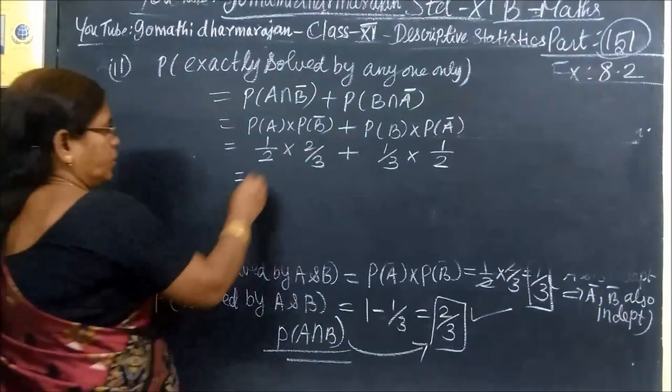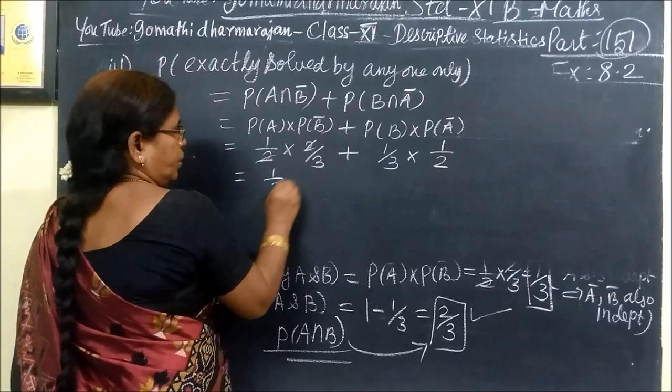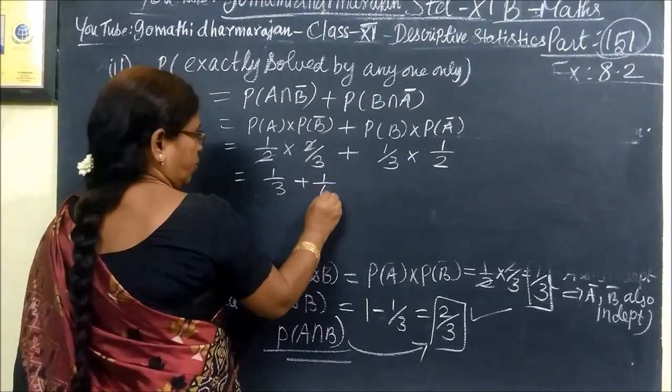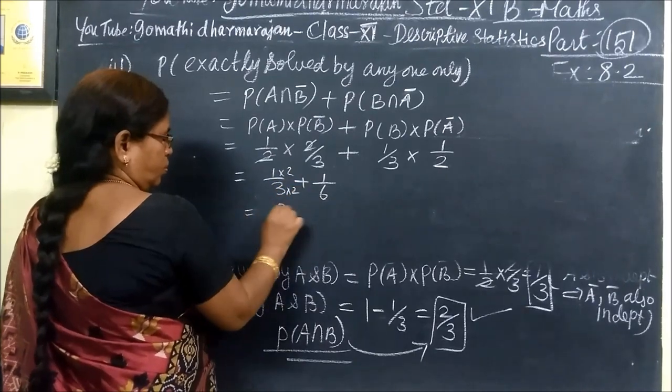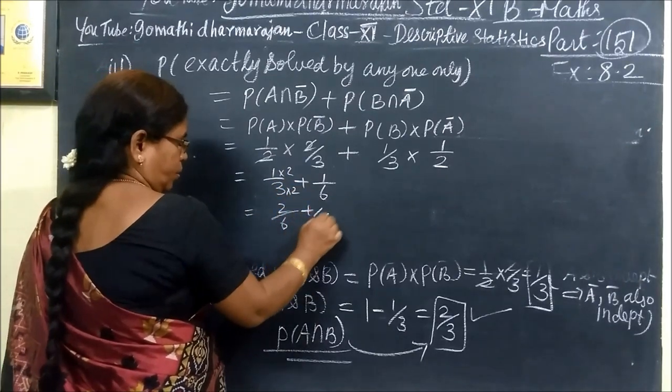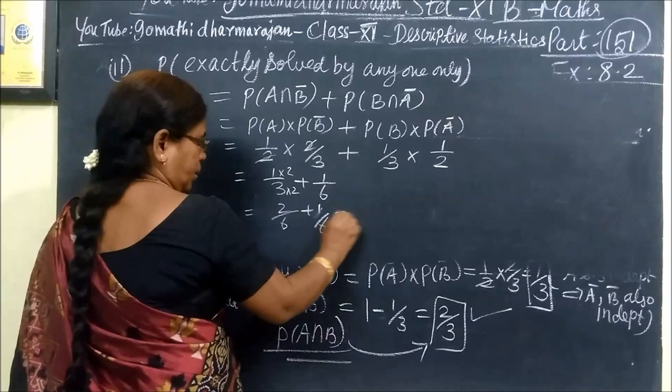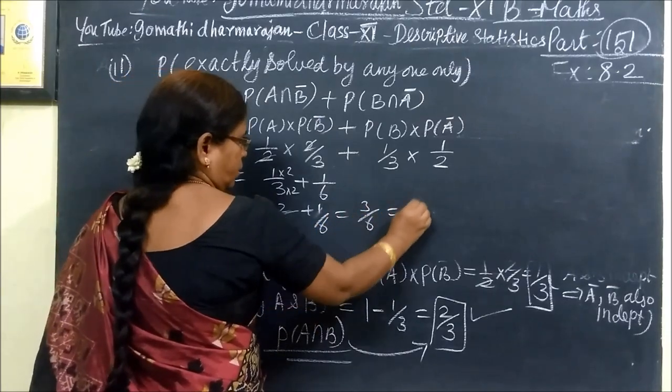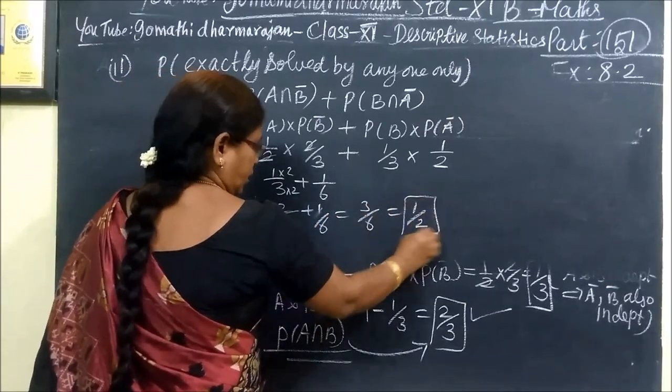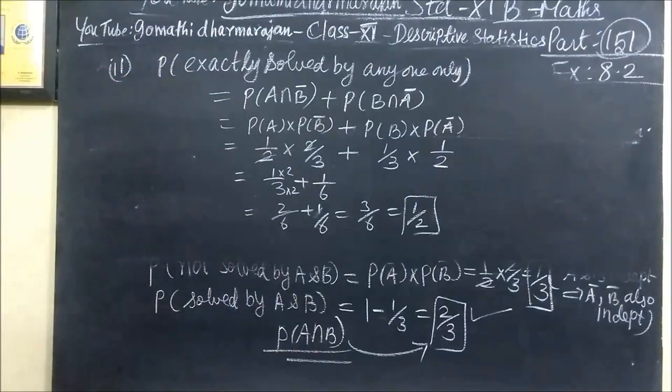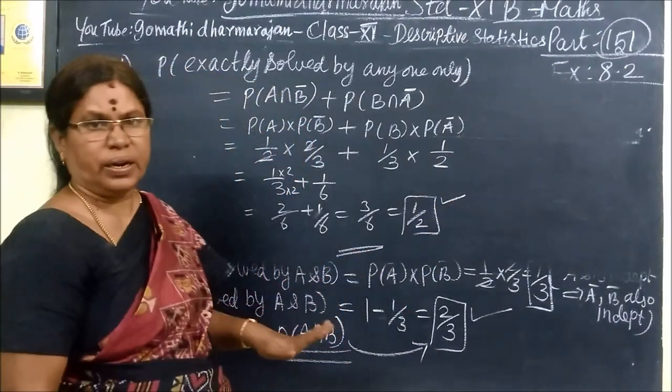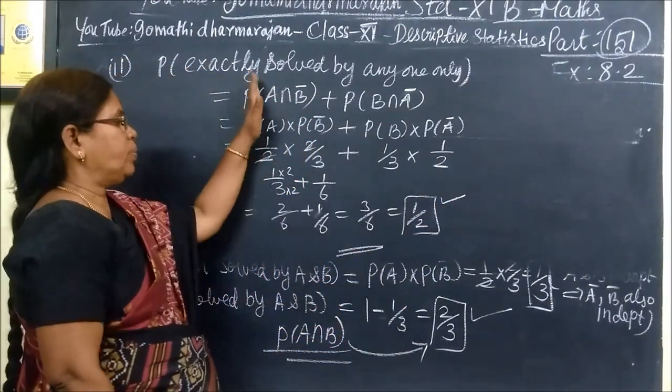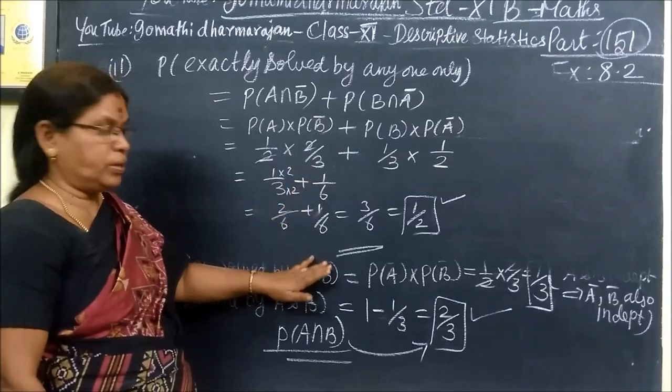So this is equal to 1/3 plus 1/6. Then 2/6 plus 1/6. So 2/6 plus 1/6 equals 3/6. So if we cancel, we are getting 1/2. So the answer for this is 1/2. This is the answer. All the steps are easier to do. In this step, we will make it easier. Thank you.